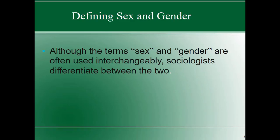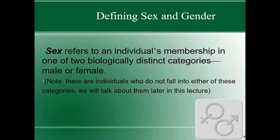Let's define these terms. We use the terms sex and gender in our common language to mean the same thing, just like we may sometimes misuse the terms race and ethnicity, but there is a dramatic difference between the two. Sex refers to an individual's membership in one of two biologically distinct categories, namely being male or female. There are individuals who do not fall into either of these two categories — a minority of individuals — called intersex people, and we will discuss them in part three of this lecture.